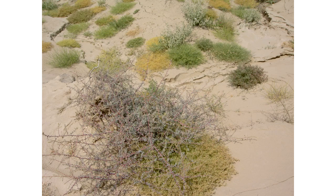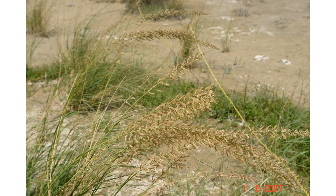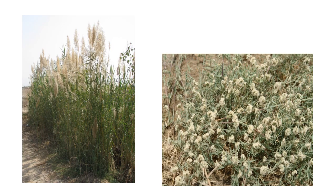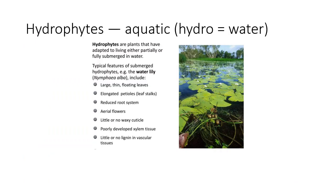This is Suaeda fruticosa. This is Desmostachya bipinnata, a highly salt-tolerant grass found in plain areas where pH level is over eight. This is Zygophyllum propinquum, present in the coastal area. This is Phragmites karka, a highly tolerant halophyte. This is Aeluropus lagopoides, also a halophyte.